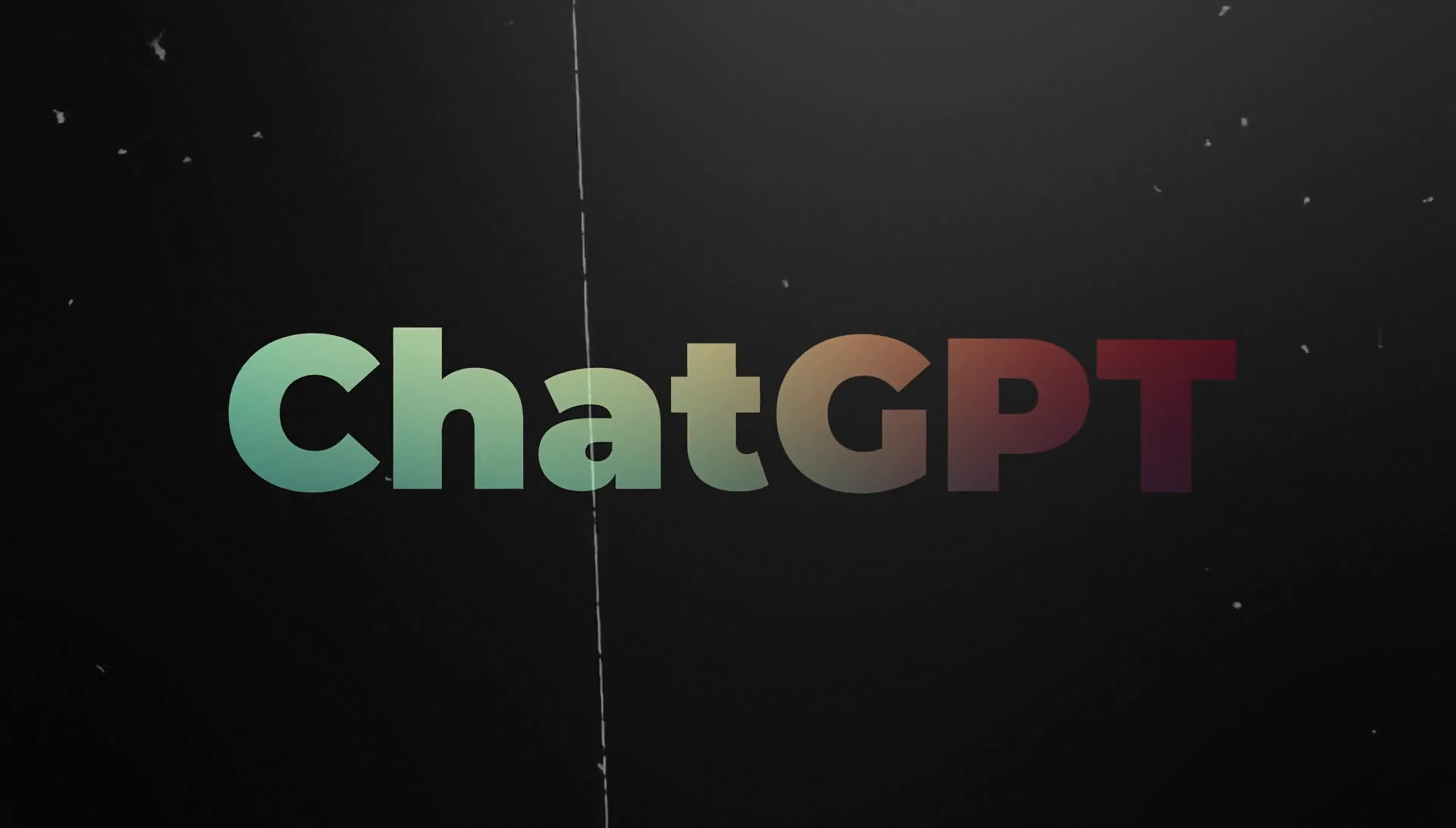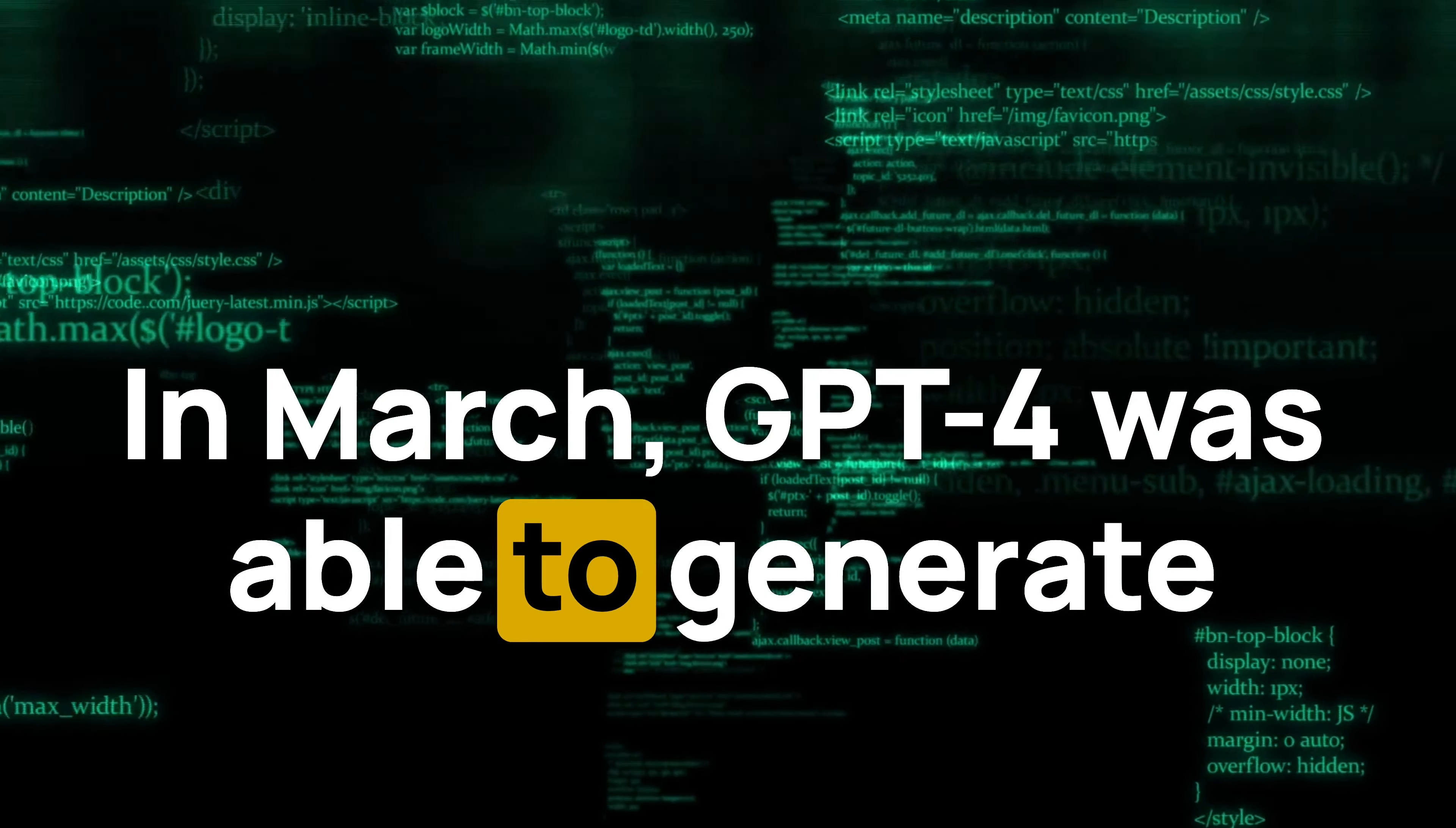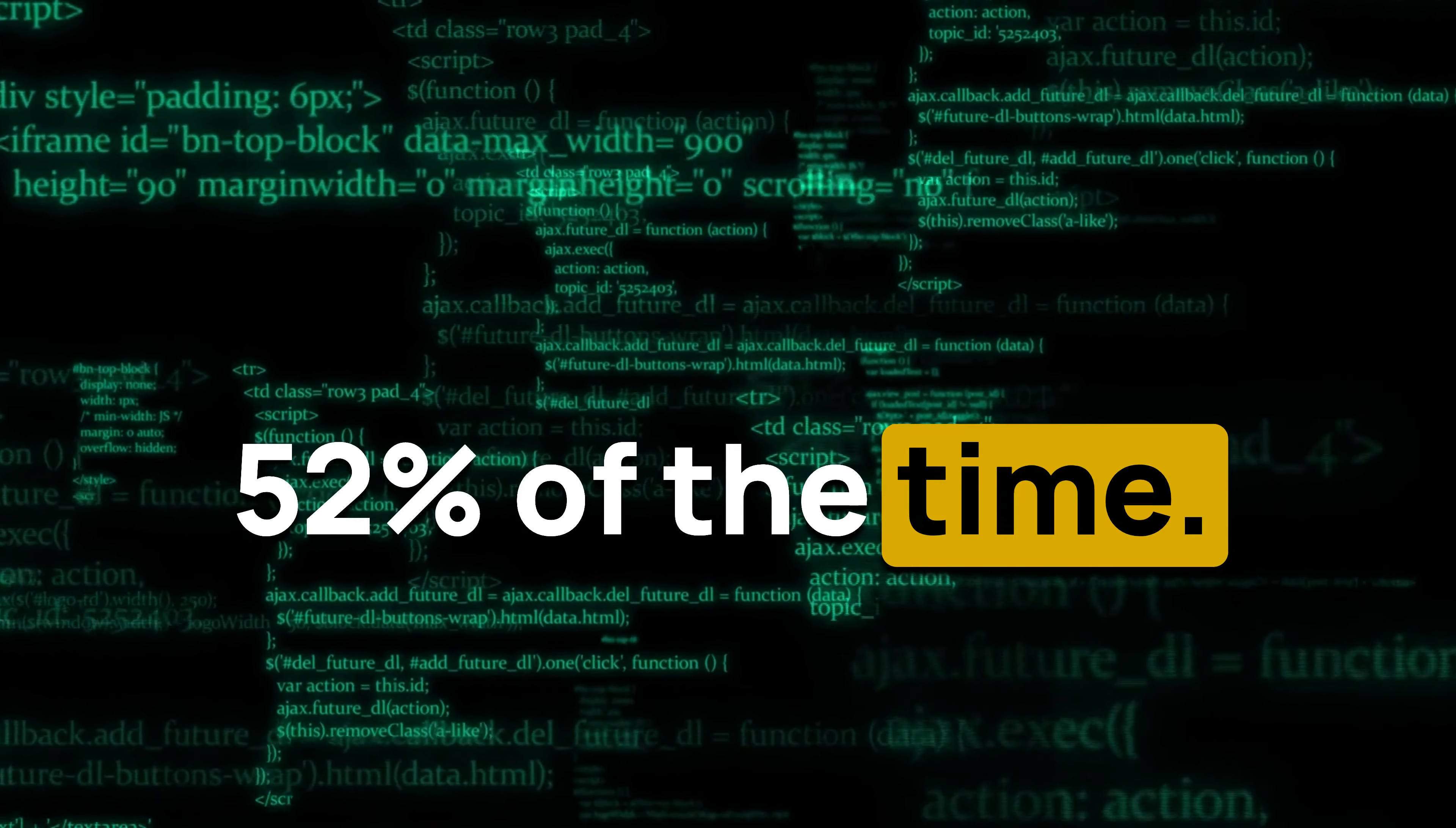A striking example of ChatGPT's declining performance lies in its code generation capabilities. In March, GPT-4 was able to generate correct code approximately 52% of the time.